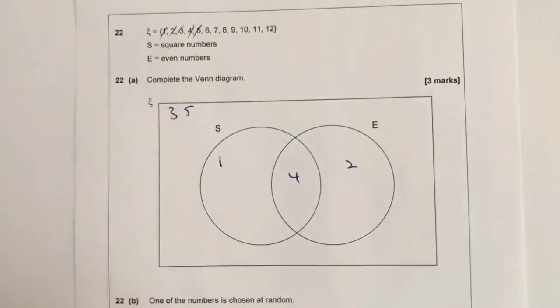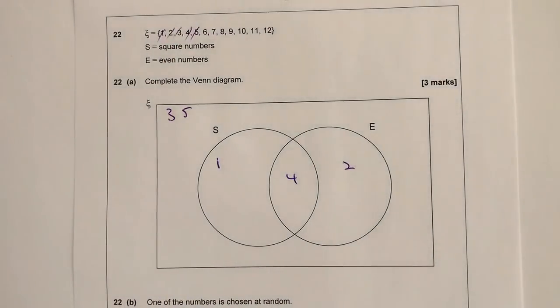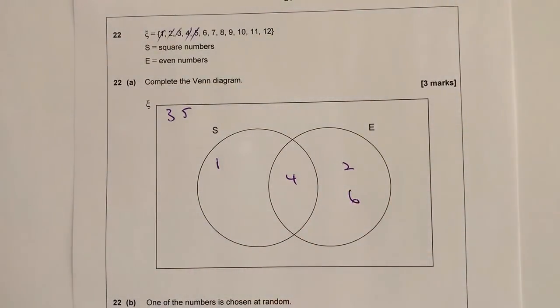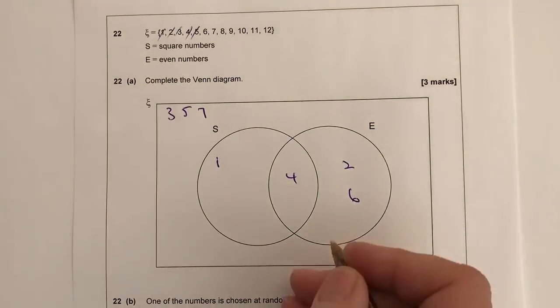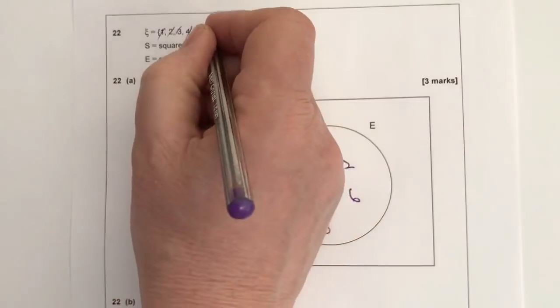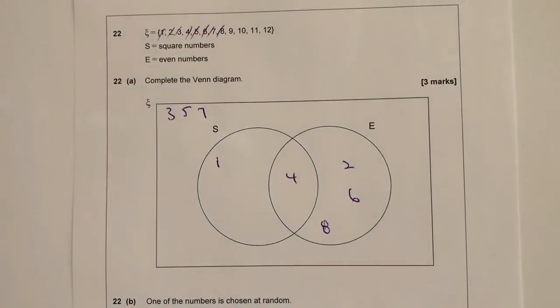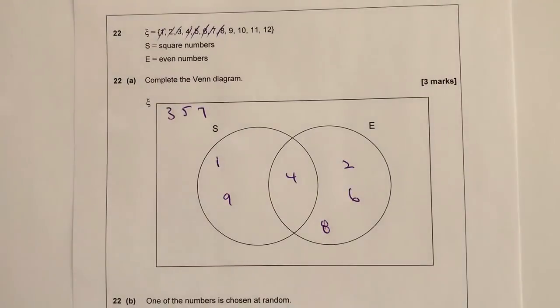5 is neither one nor the other. So I've done 3, 4, and 5, and do mark these off as you're doing them because otherwise you might lose a bit of track. So 6 is an even number. 7 is neither here nor there. 8 is going to be in the even number camp. So I've got 6, 7, and 8. 9, well 9 is a square number but it's not an even number, so it's going to go into here.